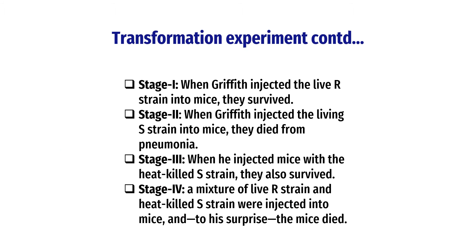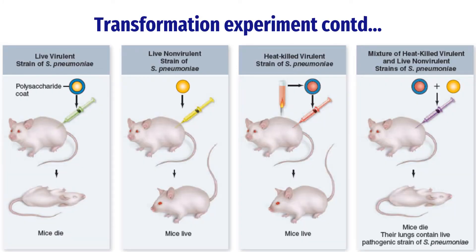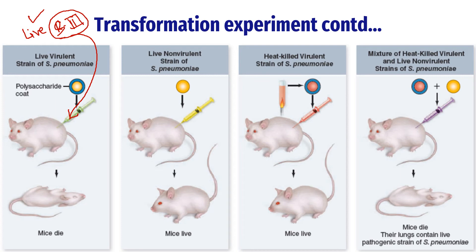There were four stages in the transformation experiment. In the first stage, Griffith injected live S3 bacteria into the mouse. As we know, live S3 strain is virulent and can cause pneumonia. He injected live S3 bacteria into the mouse, and the mouse died.